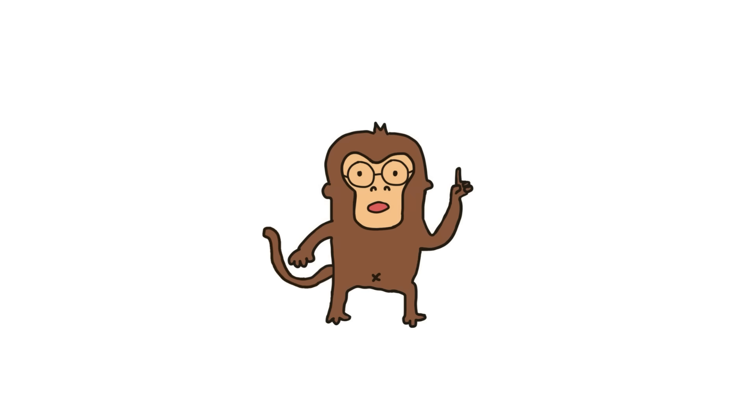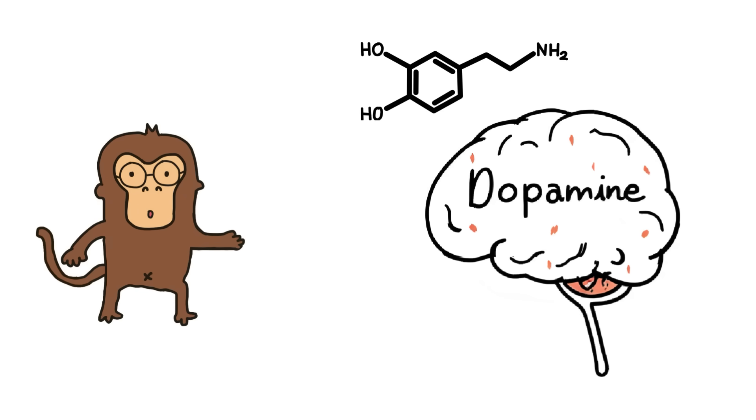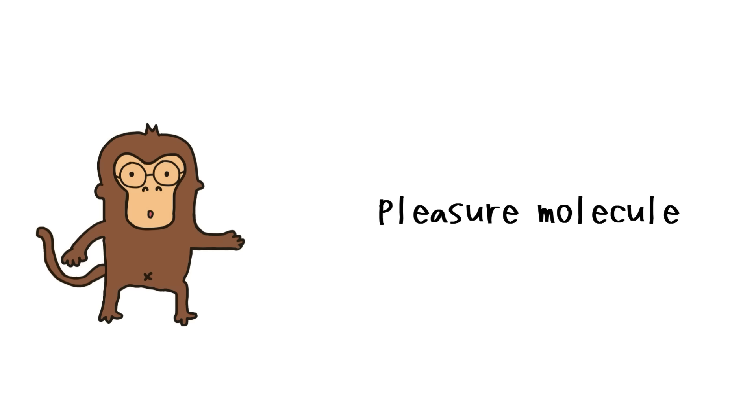Part 1: Dopamine. The answer starts with a tiny chemical inside Monkey's brain. Dopamine. People often call dopamine the pleasure molecule, but that's not quite right. Dopamine doesn't make Monkey feel pleasure. It makes Monkey want. It's the craving chemical.